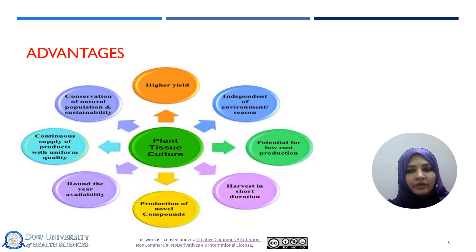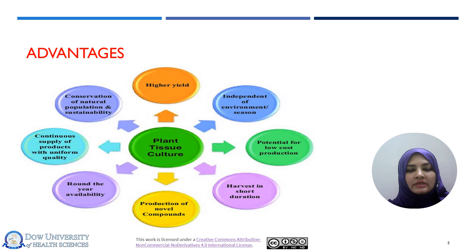The production of new varieties can be done by tissue culture methods, and the production program can be easily planned as per the demand or need of that specific crop. It can continue to supply throughout the year. Another very important advantage is genetic conservation — endangered species can be produced by the tissue culture method and stored for a very long period of time at very low temperatures. Any kind of cells such as seeds or any part of the plant can be preserved for a very long period of time.